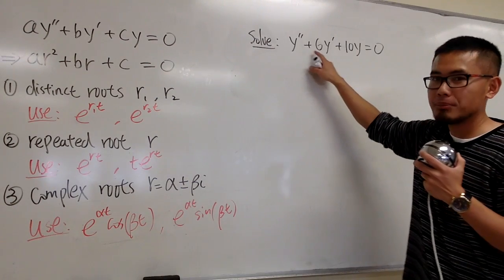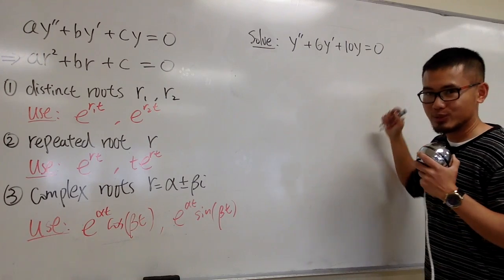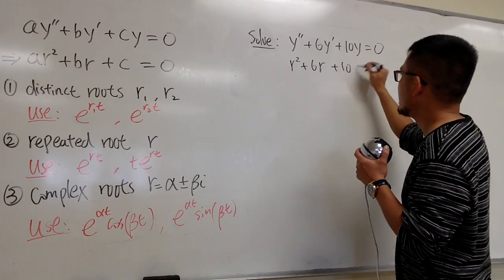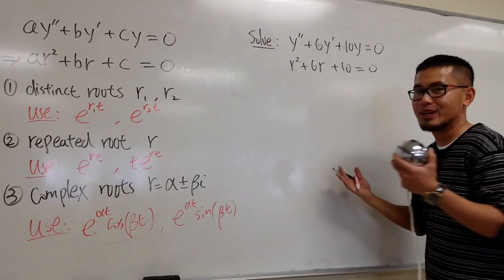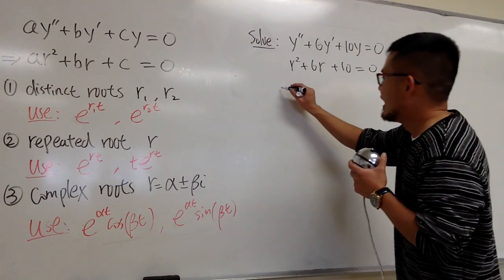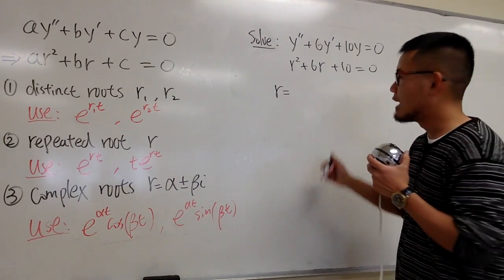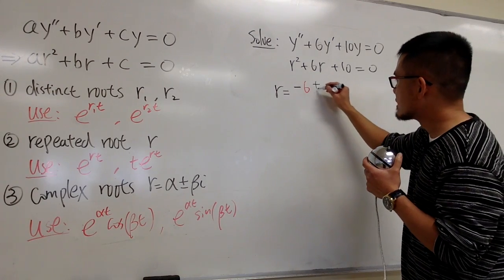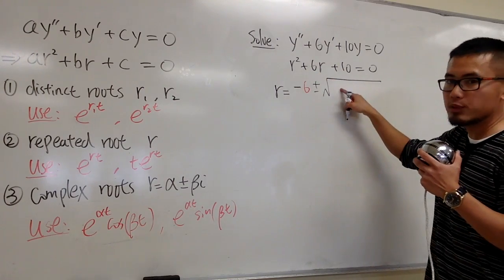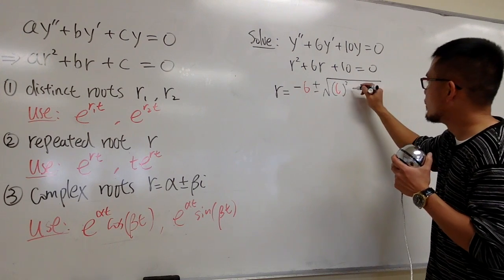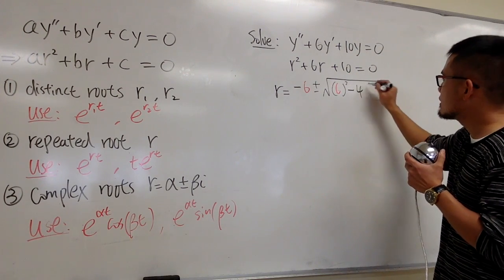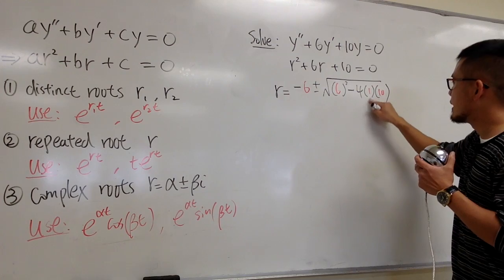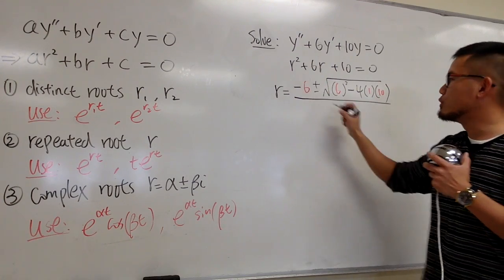Let's do an example. Suppose I want to solve y'' + 6y' + 10y = 0. We change this to its characteristic equation: r² + 6r + 10 = 0. This is not factorable, so we use the quadratic formula. r = (−6 ± √(6² − 4·1·10)) / (2·1). Inside the square root: 36 − 40 = −4.